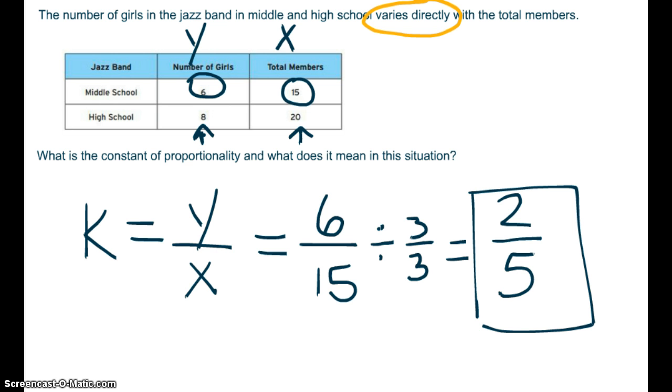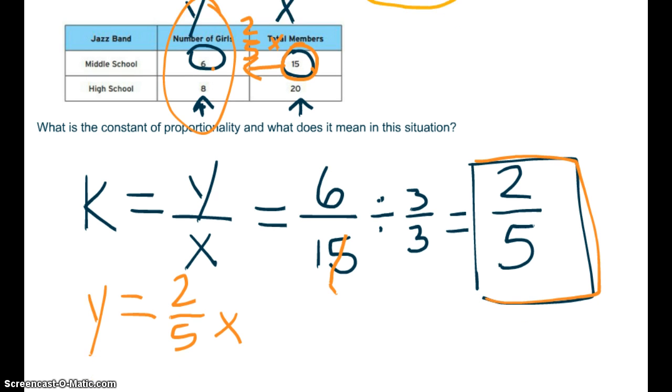The constant in this situation is 2 fifths. And let's think about whether or not that makes sense. Do we take our X values and multiply them by 2 fifths to get our Y values? Yes. Remember, you always take your constant and you multiply it to your X's to get your Y's. So Y equals 2 fifths of our X's. These values are 2 fifths of our X values. So a constant of 2 fifths does make sense.